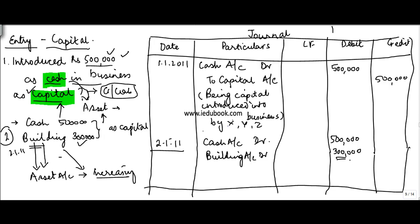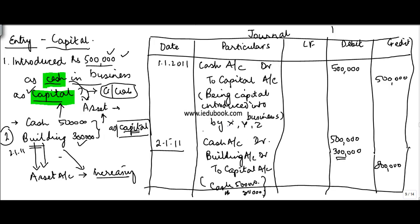So I debit building account by three lakh. The total debit is eight lakh — five plus three — so the credit also has to be eight lakh. This entire cash and the value of the building which the business is getting is payable to the owner, so you credit capital account. The narration reads: 'being capital introduced into the business — cash five lakh and building three lakh' — or, by whosoever, in the form of cash five lakh and building three lakh.